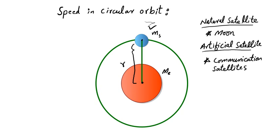Since the satellite is revolving in a circular orbit, the centripetal force is equal to the gravitational pull of the Earth. The centripetal force is ms·v² divided by R.